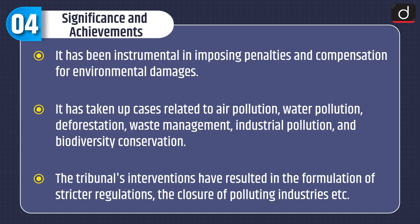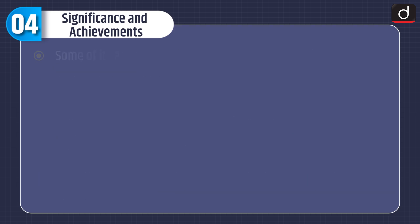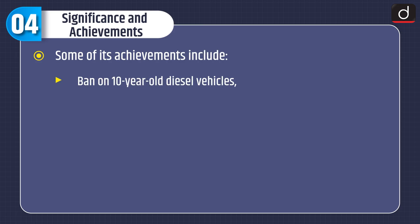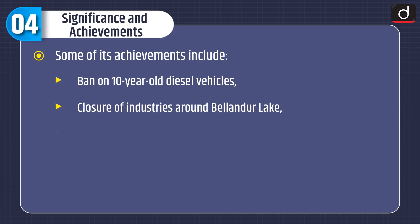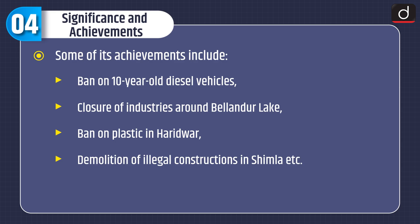The tribunal's interventions have resulted in the formulation of stricter regulations and the closure of polluting industries. Some of its achievements include ban on 10-year-old diesel vehicles, closure of industries around Belandur Lake, ban on plastic in Haridwar, and demolition of illegal constructions in Shimla.